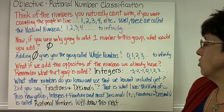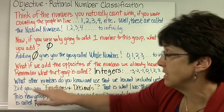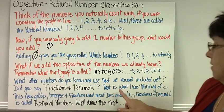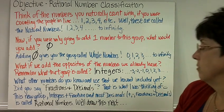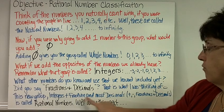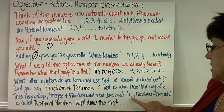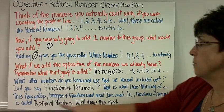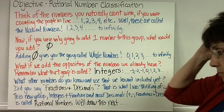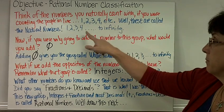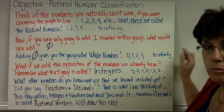What are some other numbers that you know and use that we haven't included yet? Hopefully you said decimals and fractions, because they're your absolute favorite. This new group — the integers plus positive and negative fractions and most decimals (I'll explain why it's only most on the next page) — positive and negative fractions and decimals combined with integers are called rational numbers. So we have four groups: natural numbers, whole numbers, integers, and rational numbers.